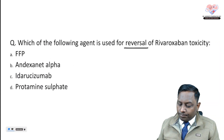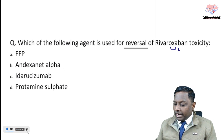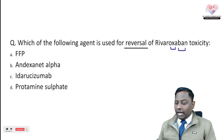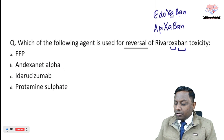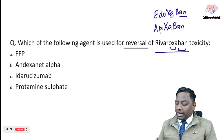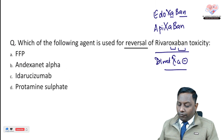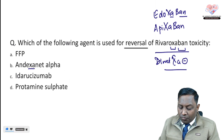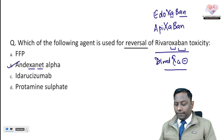Which of the following agents is used for reversal of rivaroxaban toxicity? Rivaroxaban is a Factor Xa inhibitor. Other agents like apixaban, edoxaban, and betrixaban are also directly acting Factor Xa inhibitors. Whenever there is overdose or toxicity, we need to neutralize Factor Xa. The drug that can neutralize Factor Xa is andexanet alpha.